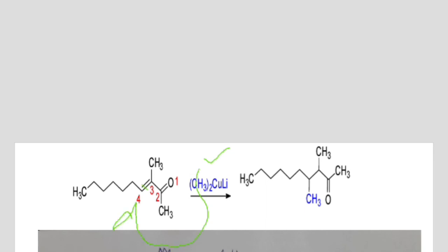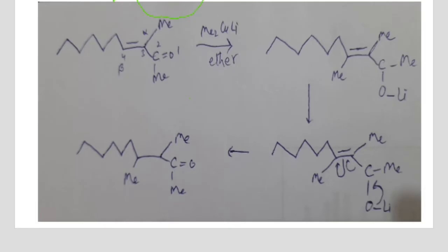Again, the Gilman reagent attacks at the fourth position, and this bond shifts towards the other carbon and then the carbonyl carbon, with oxygen acquiring a negative charge. Lithium forms the alkoxide. Again, the bond between oxygen and lithium shifts; the carbon-carbon double bond is then converted into a carbon-carbon single bond and we obtain the final product.